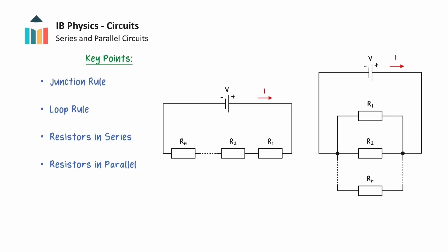This video will explore the properties of series and parallel circuits. We will begin by examining how current behaves throughout a series circuit, as well as at junctions in a parallel circuit. We will show how potential difference varies around the chosen closed loop in a circuit. Afterwards, we will analyse the effect of connecting resistors in series in a circuit and connecting resistors in parallel in a circuit.